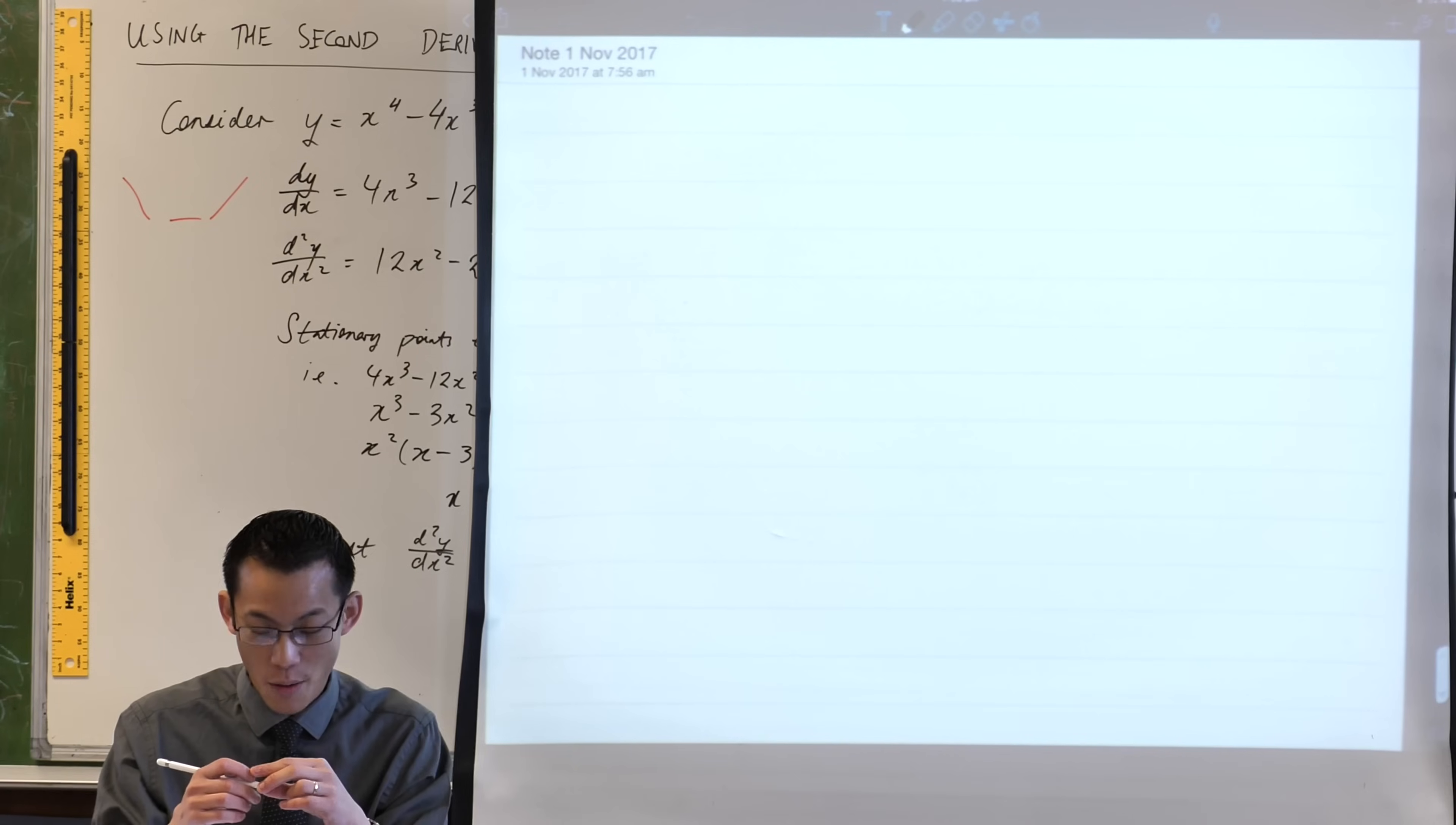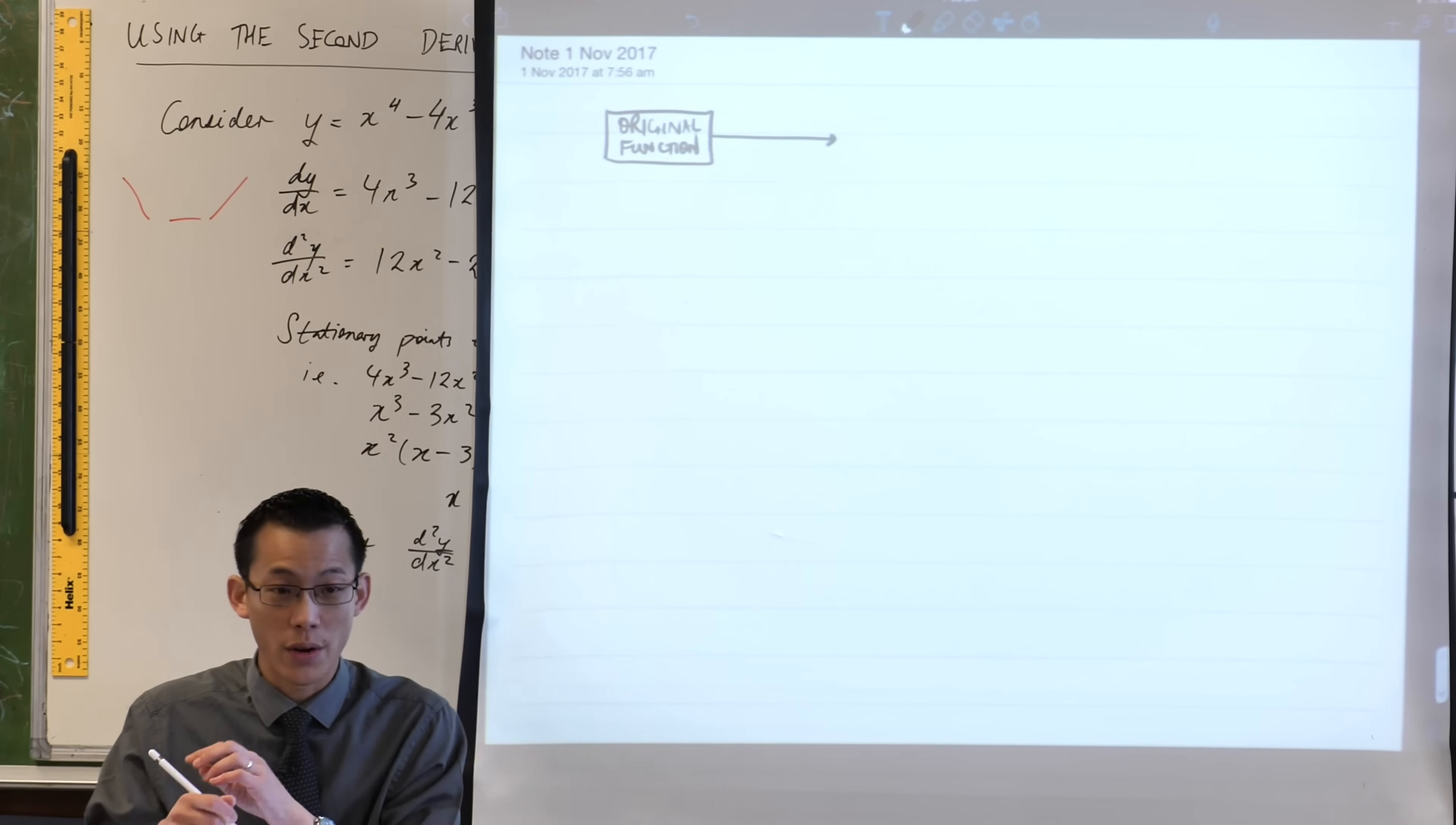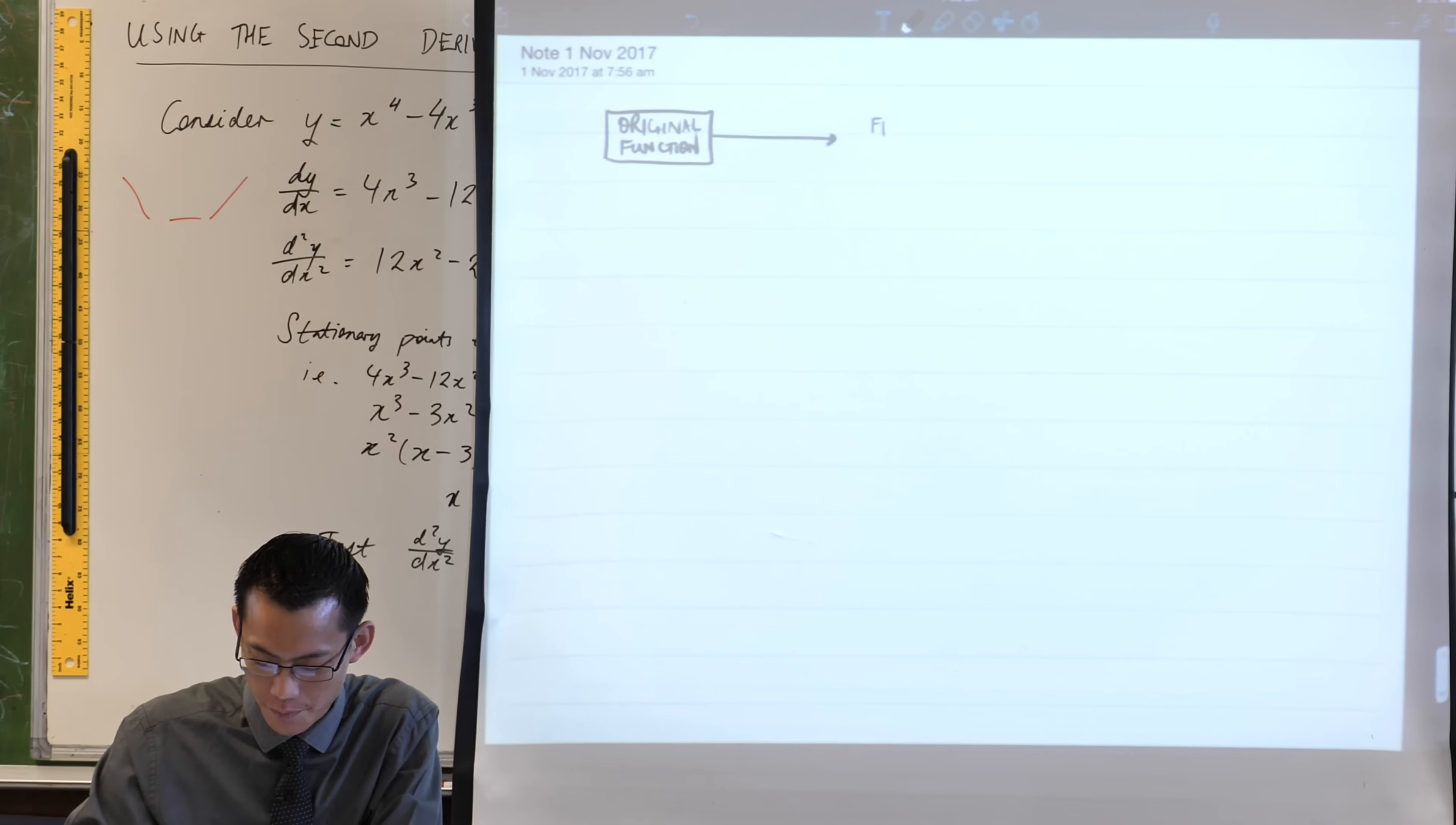On the left-hand side, where we always begin, is with the original function. If this is a question to do with stationary points, then we know no matter what you're going to have to find a first derivative. From your original function, going across the page - by the way, I'm trying to do this, my PDF is an A4 page, so roughly try and do the size of your page the size of mine because otherwise you'll run out of space. You're going to differentiate, find your first derivative. This is the easy part, we can do this on autopilot, there's not really many choices involved.